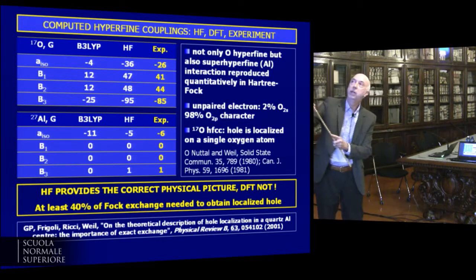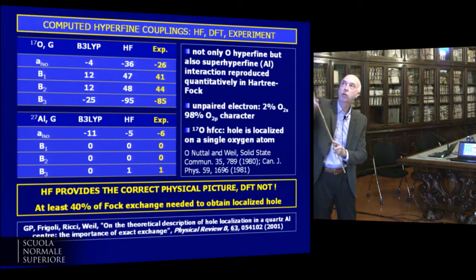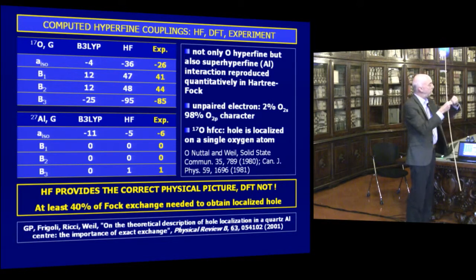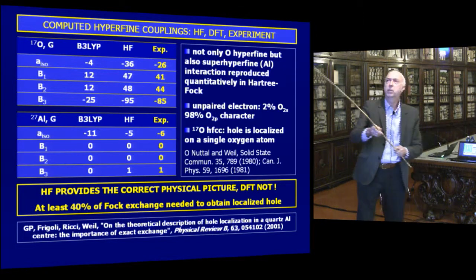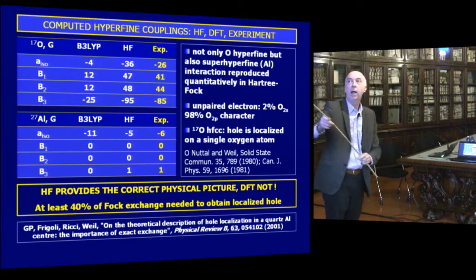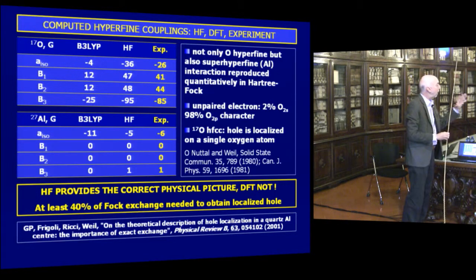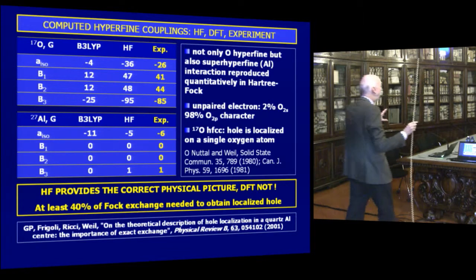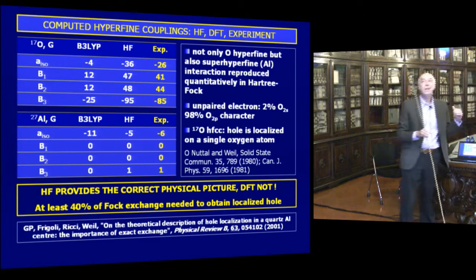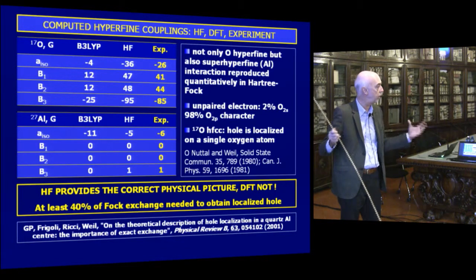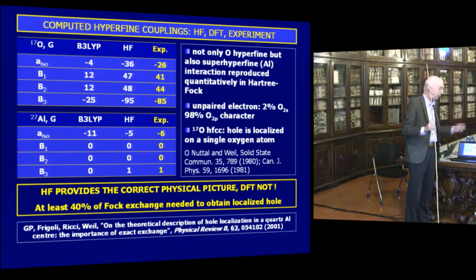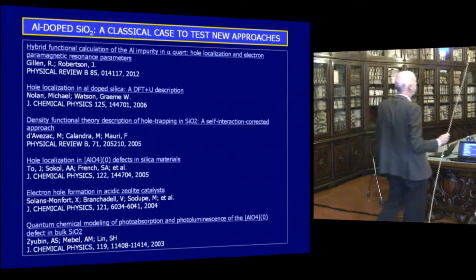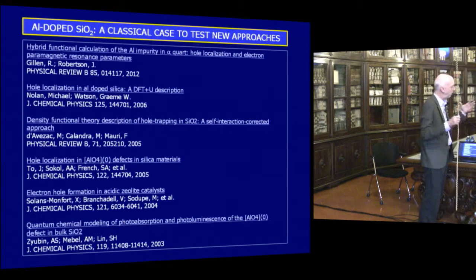HF looked very well — in particular the dipolar part for 17O isotopes was very well described. Also the so-called super-hyperfine, the interaction of the electron spin with the next nearest neighbor nucleus (aluminum), was properly described at the HF level and completely wrong at the DFT level. So we concluded that HF provides the correct physical picture, while DFT does not. It is now realized that to get proper localization, you need at least 40% HF exchange in your DFT — B3LYP is not enough, and every other normal functional is not enough. This has become a classical benchmark case: when people want to test a new self-interaction-corrected functional on a solid system, they use this as a benchmark.